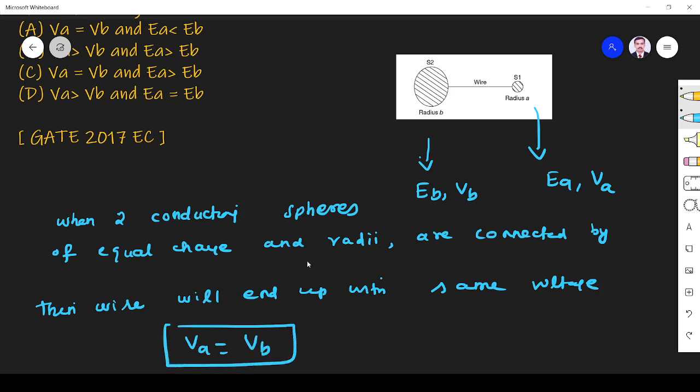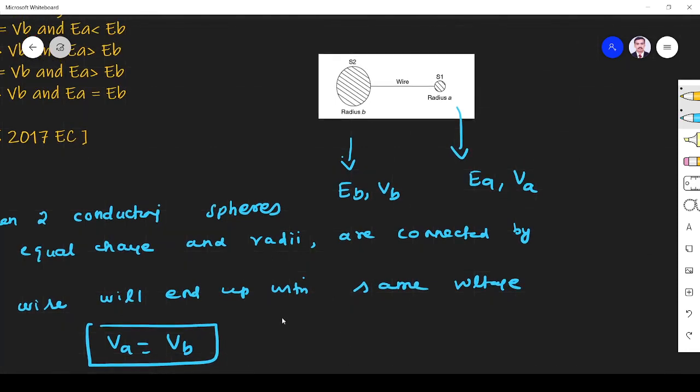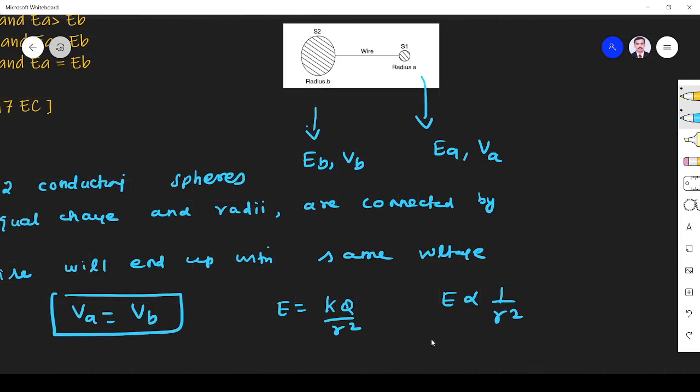Second one, you see which is the high radius. We know that E is equal to KQ by R square. That means E is inversely proportional to distance. For S2, what is the radius? B. So E2 is inversely proportional to 1 by B square.